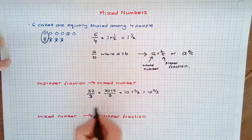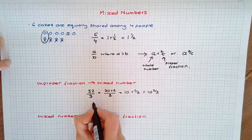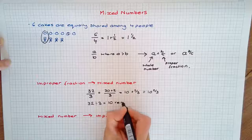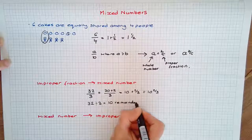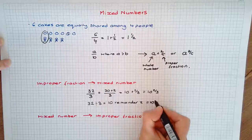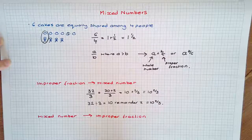You may remember with division, if you consider this problem as 32 divided by 3, you would get 10 remainder 2. The 2 is still being divided by 3, so you could simply write 10 and ⅔.